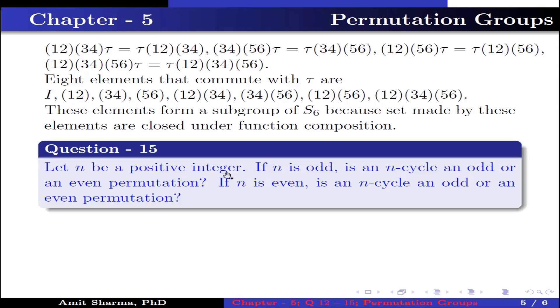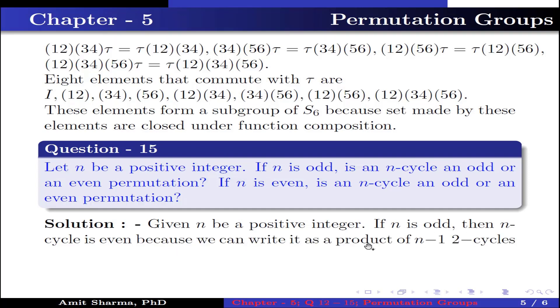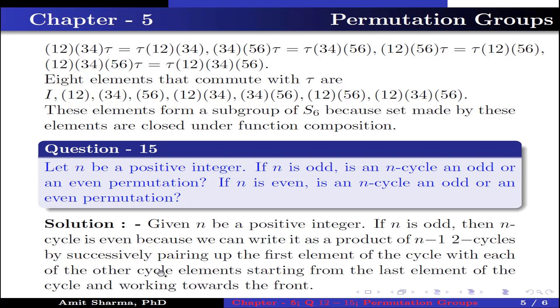Question number 15: Let n be a positive integer. If n is odd, is an n-cycle an odd or even permutation? If n is even, is an n-cycle an odd or even permutation? Given n be a positive integer. If n is odd, then an n-cycle is even. Why? Because we can write it as a product of n-1 two-cycles by successively pairing the first element of the cycle with each of the other cycle elements starting from the last element of the cycle and working towards the front.